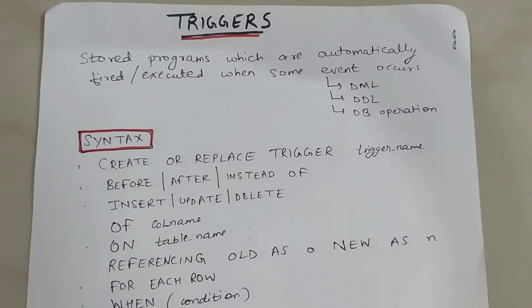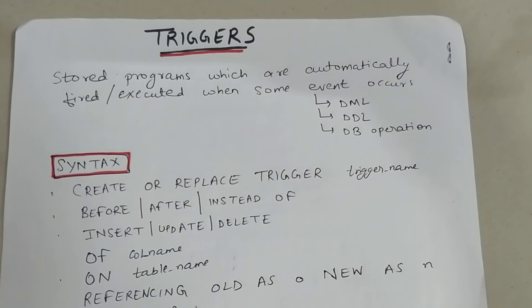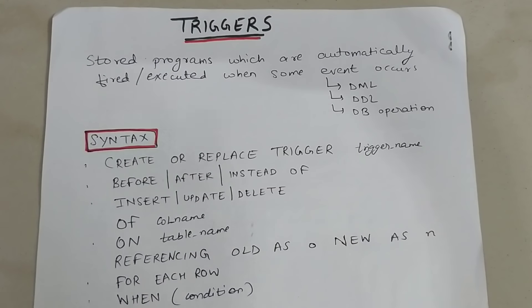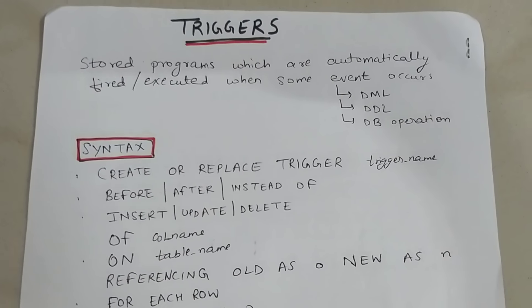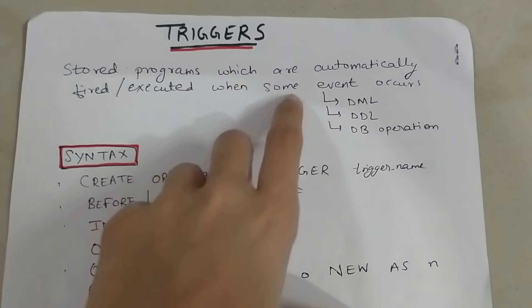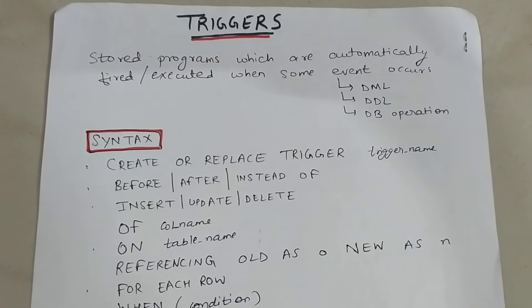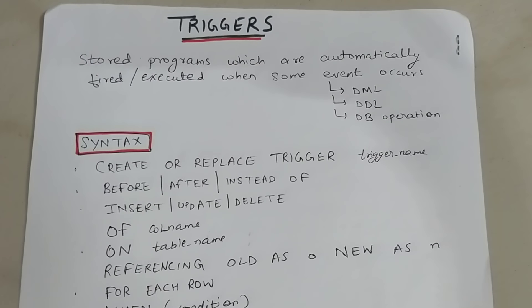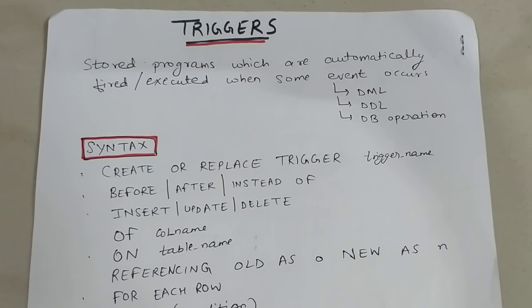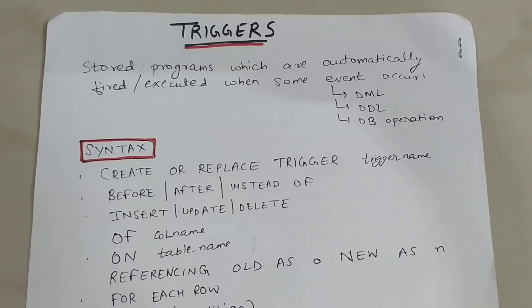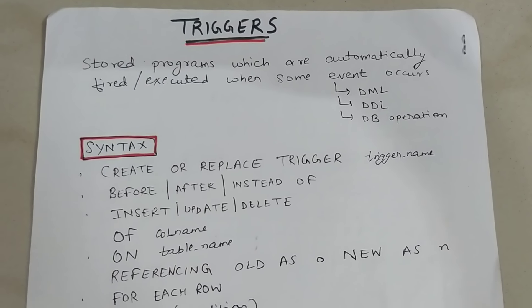Hello everyone, welcome back to my channel. In this video we are going to understand what triggers are. Triggers are stored programs which are automatically fired or executed when some event occurs. These events can be DML, DDL, or any database operation — for example, inserting or deleting a value in a column — so that the user can get notified. This is known as triggers.